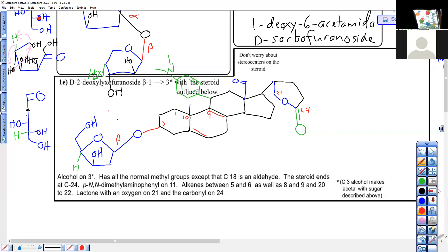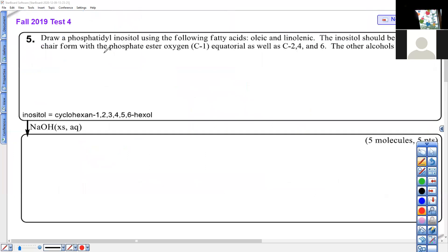And we're saving. And when we come back, we will be first looking at question five on the same exam. A phosphatidyl inositol. And this will be where we learn what an inositol is. So I'll see you very shortly. And until then.